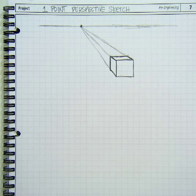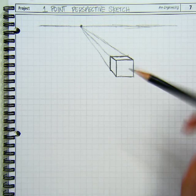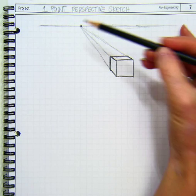And then wherever it intersects my vanishing point, I'm going to darken that for my object line. And here is my one puzzle cube in one point perspective. Notice it's vanishing towards this line, to this point.